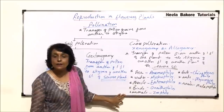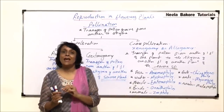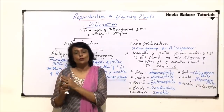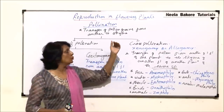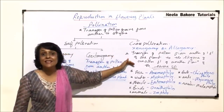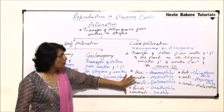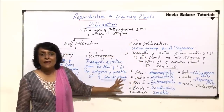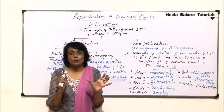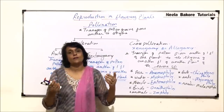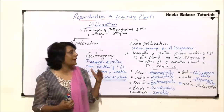Cross-pollination will take place only when these agencies are available. If these agencies are not present, there is no mechanism by which pollen grains can move from the anther to the stigma of a different plant. These agencies are therefore very essential. Now let us consider the importance, significance, and drawbacks of both types of pollination.